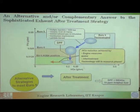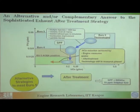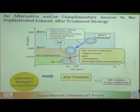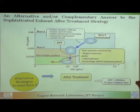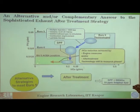And then the lambda sensor — a lambda sensor is nothing but an oxygen sensor that you put in the exhaust, which gives feedback to the ECU. So, when you do all this, you can actually come to Euro 4. Now the challenge is to come to Euro 5, and from here you can do DPF — diesel particulate filter. When you do DPF, you can actually reduce the PM levels.